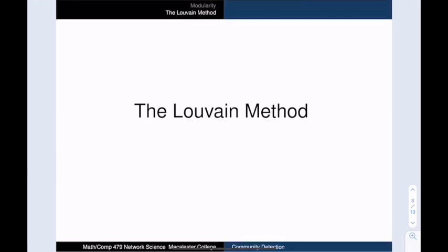Next, we will talk about a very popular community detection algorithm called the Louvain method. This is an approximation algorithm that tries to maximize the modularity score and does well in practice. One nice feature of the Louvain method is that it decides how many communities to return as part of its process.